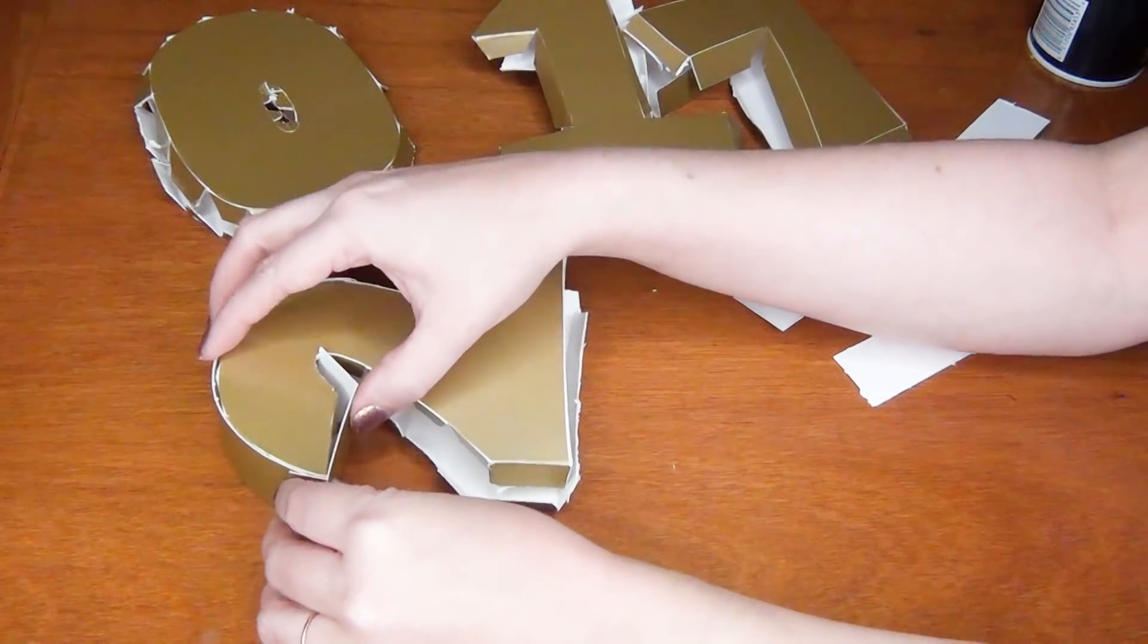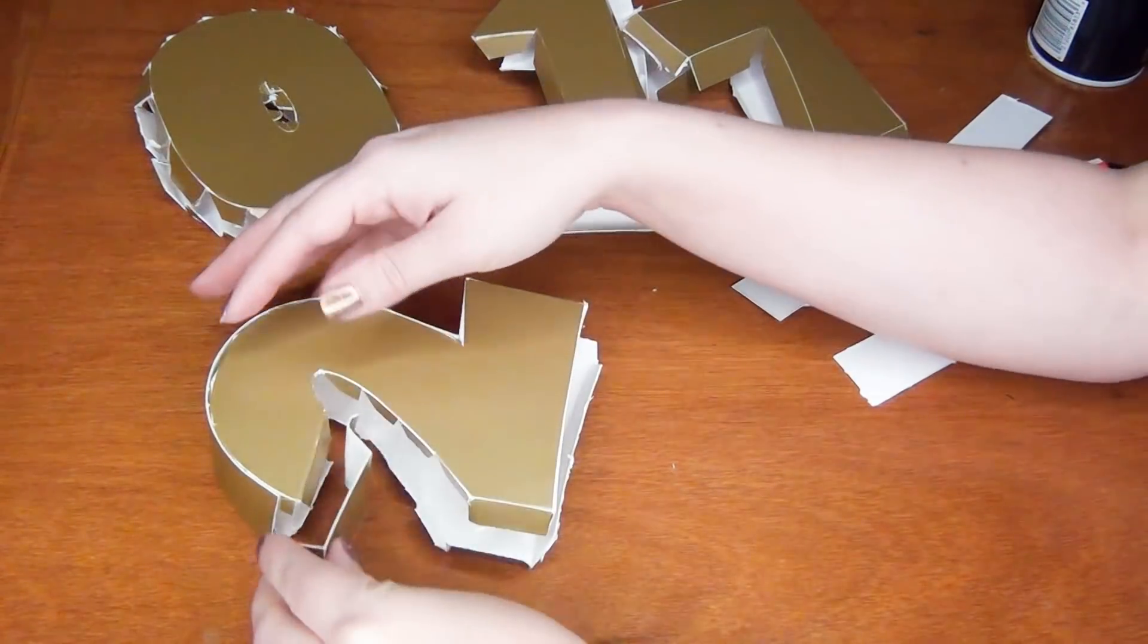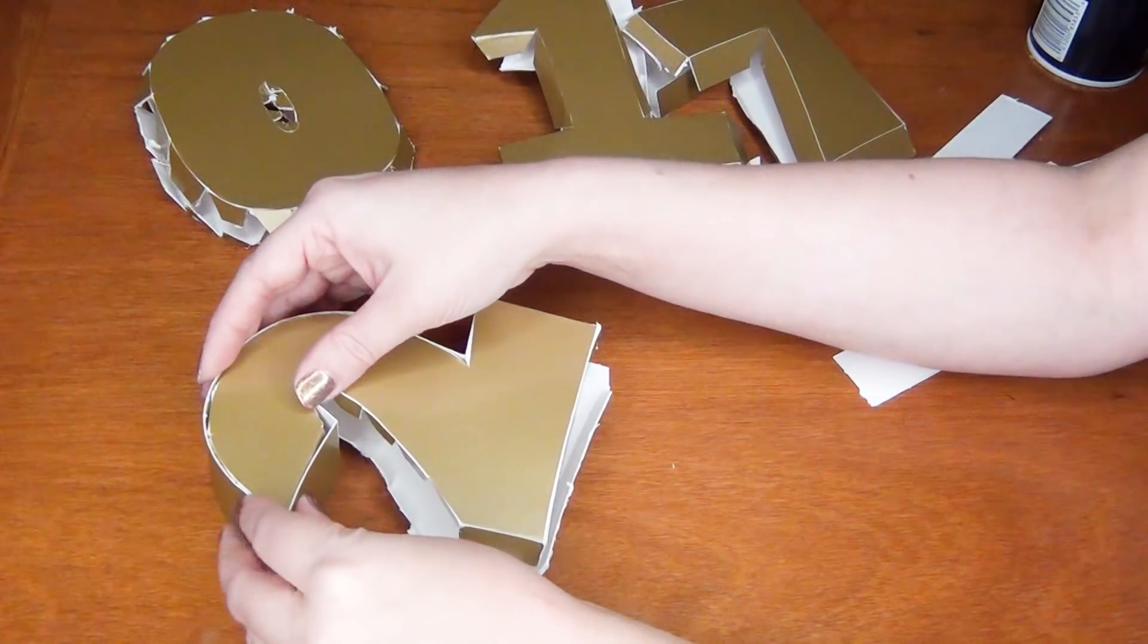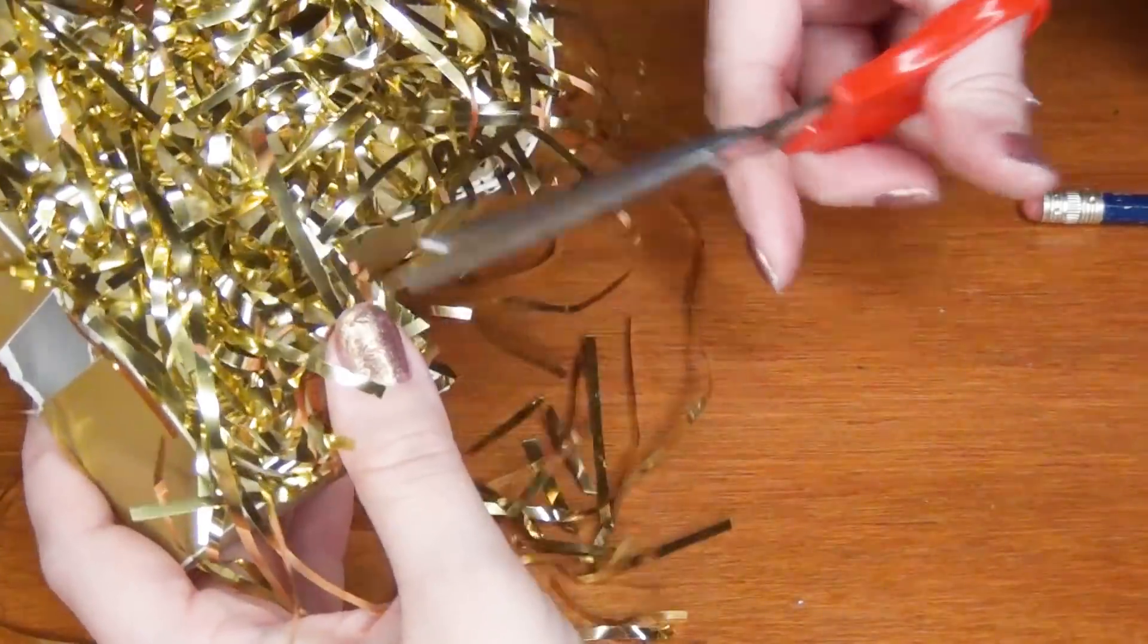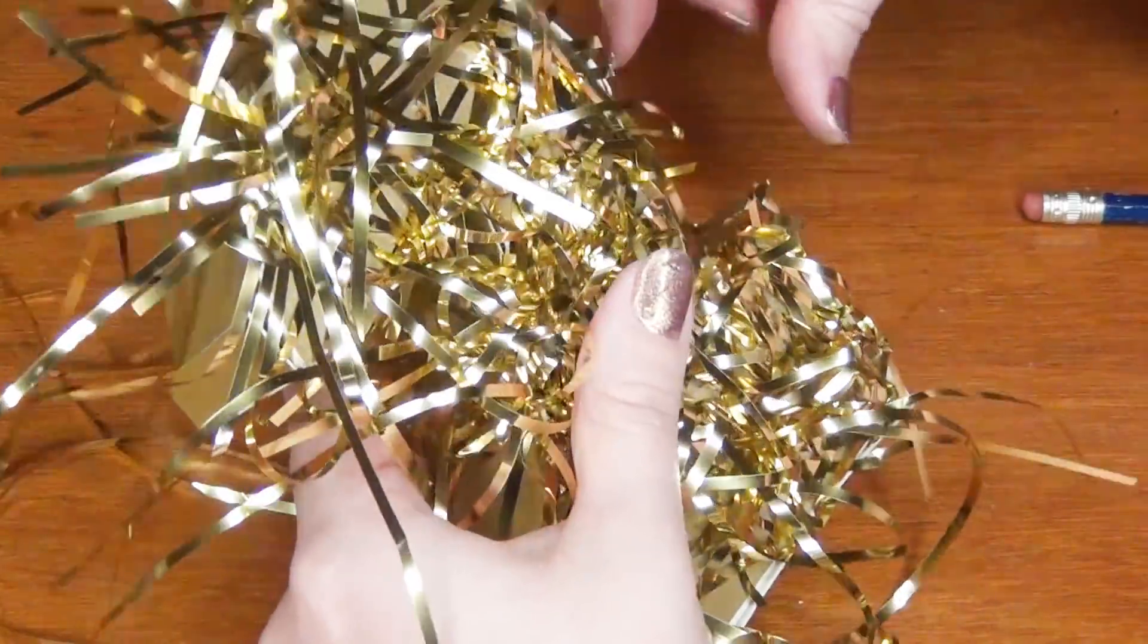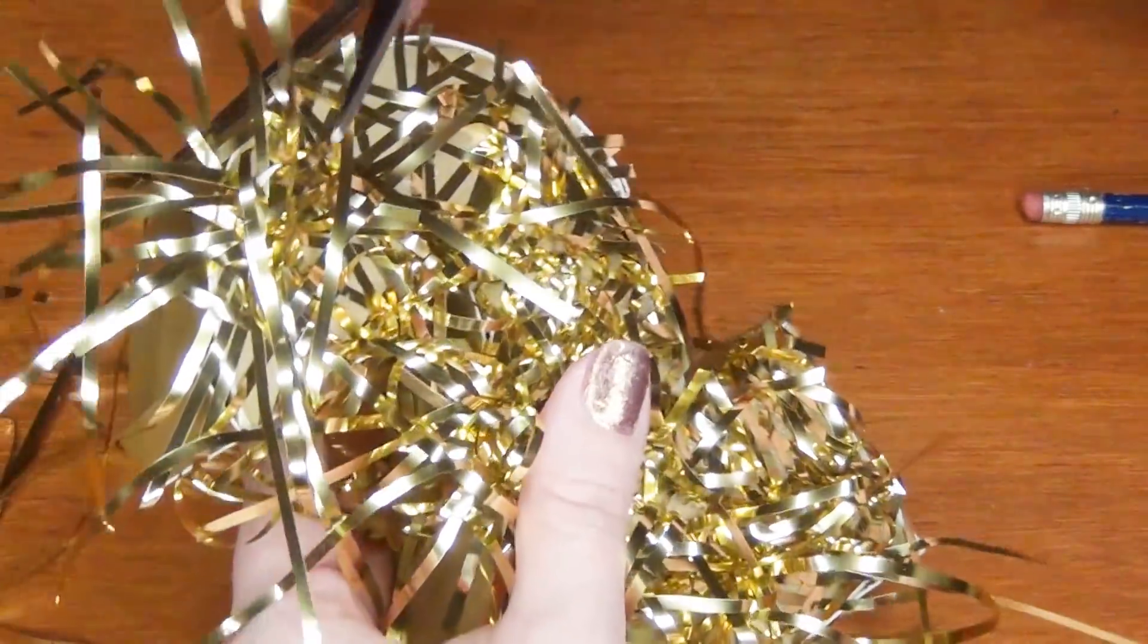Once you've glued around the perimeters of each of your numbers, give them some time to dry. Then spray the outside of them with spray adhesive and begin pressing your tinsel or confetti into place on top of them. Do the front, then the back, and then the sides. After the tinsel is in place, trim around the edges with some scissors.